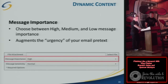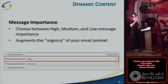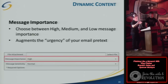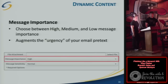Another option is message importance. You can specify how important you want your message to be. In Outlook especially, you'll get an email that says high importance with the red exclamation point. You can set that, or set it to medium or low. You can augment that to your email pretext — like sending an email saying 'read this immediately' or 'I need this done by end of day.' If you mark it as high, it just adds to the legitimacy of your email.